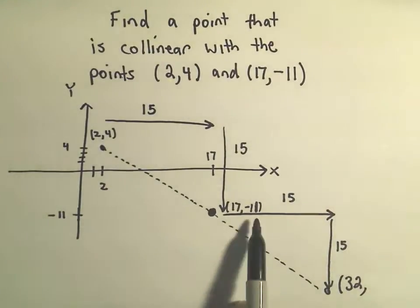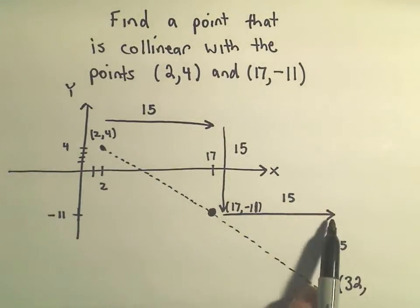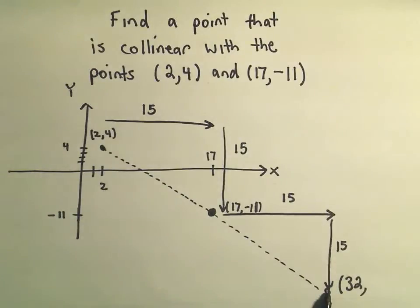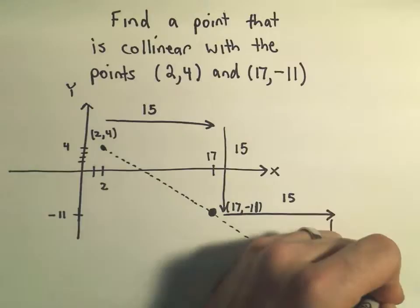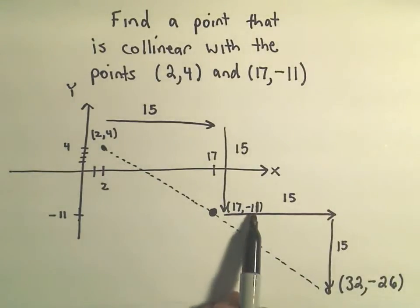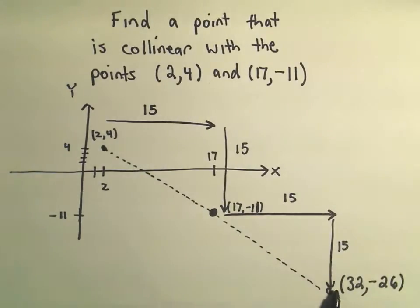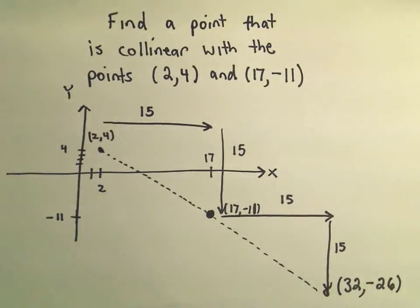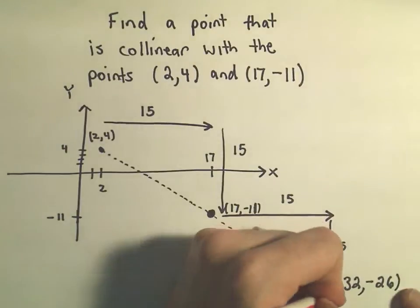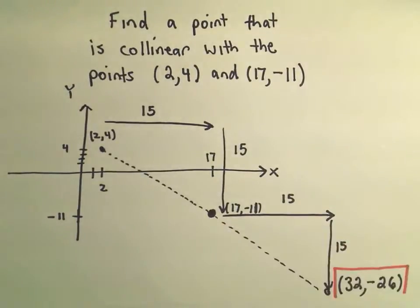If I was at y = -11 and went down another 15 units, I'd be at the y-coordinate of -26. We take -11 and subtract 15 to get the new coordinate. So I've produced a point that is collinear with the two given points: the point (32, -26) is definitely collinear.